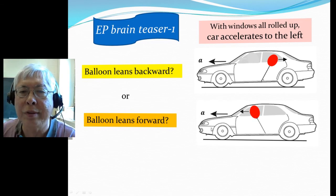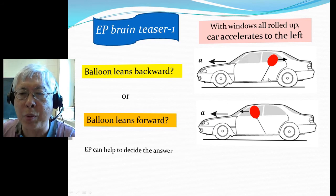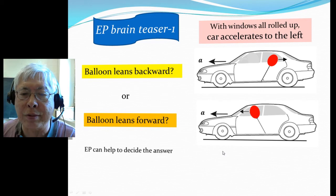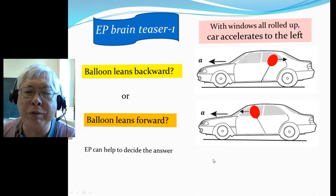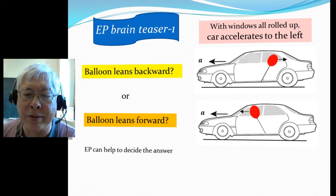It turns out the equivalence principle can help to decide which one is the right result. First of all, we could do the experiment. We can actually take a balloon in the car and see which way it leans.